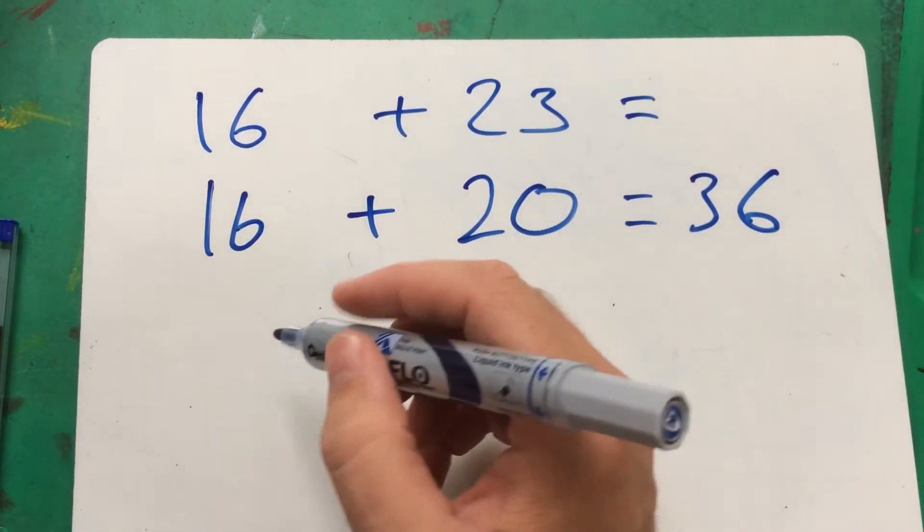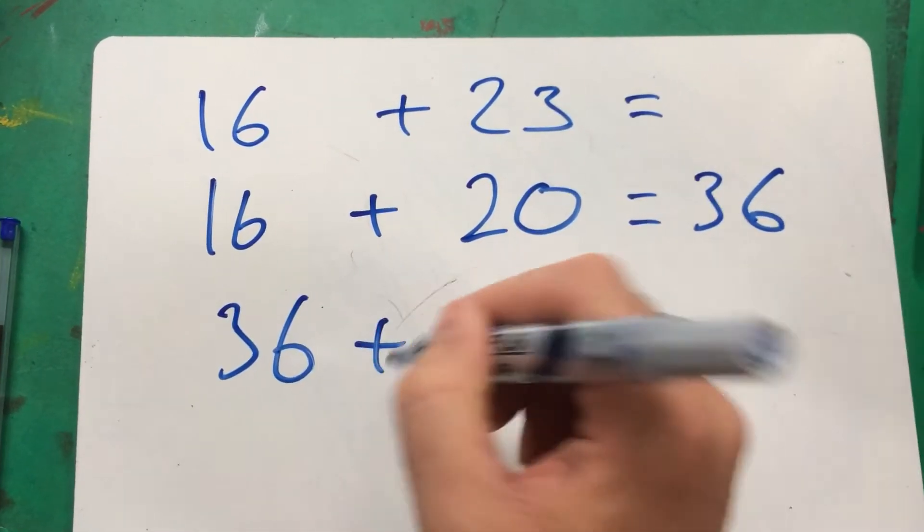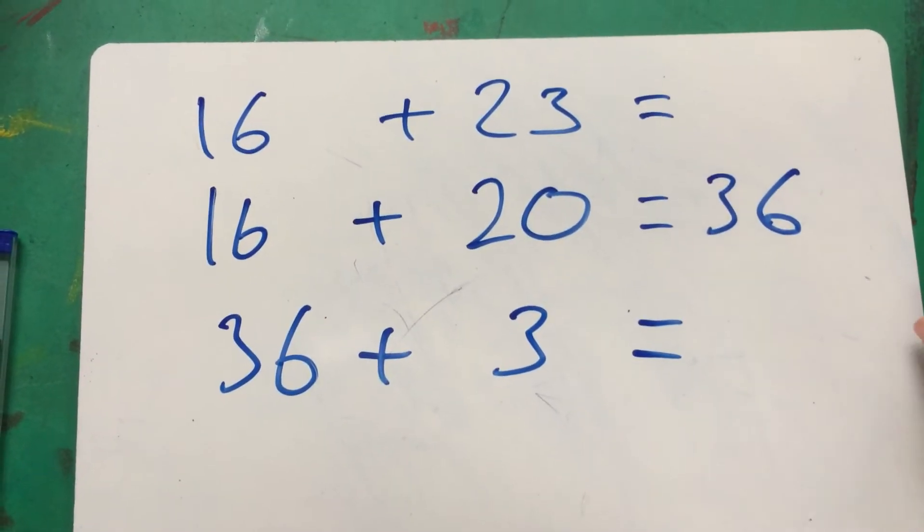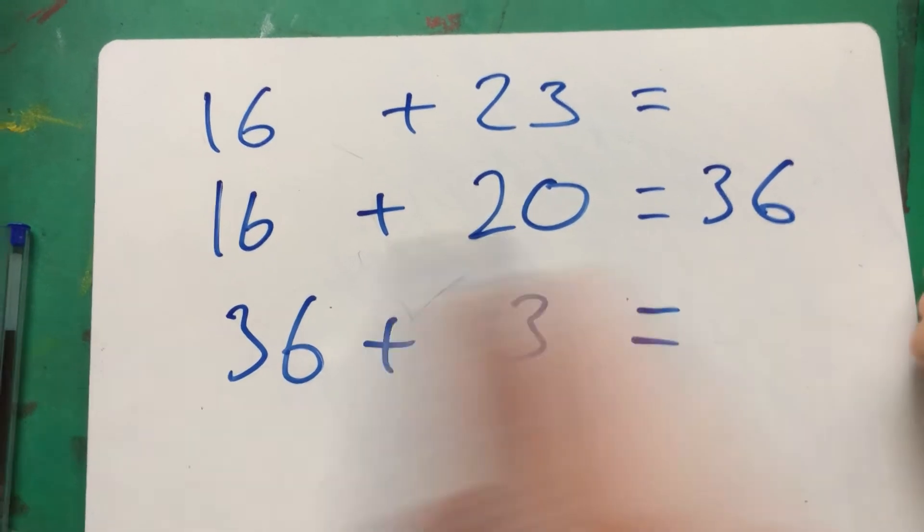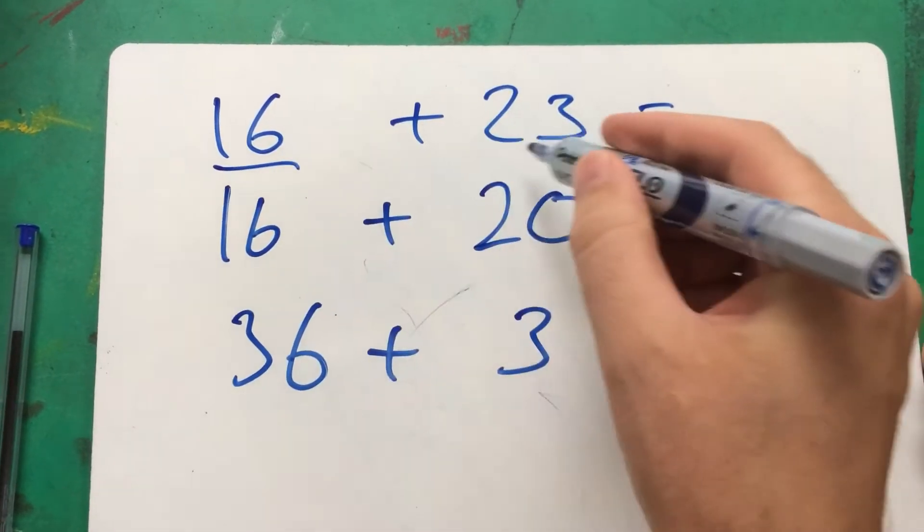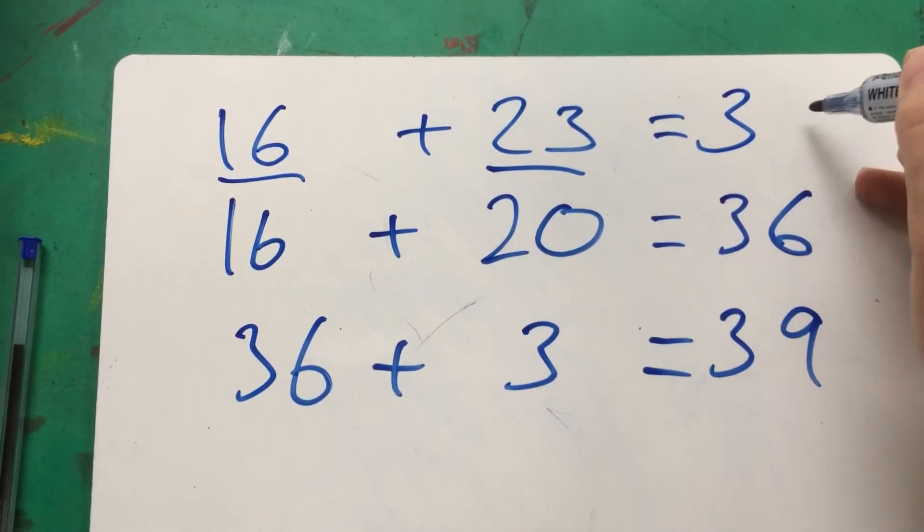Then we're going to take that 36 and we're going to add the leftover units from 23. What's 36 plus 3? 39. Fantastic. There we go. That's 16 plus 23 using Horizontal Addition.